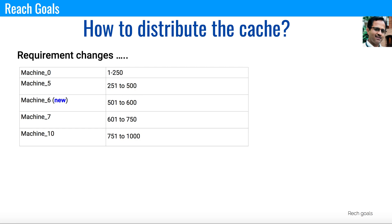When we have a new machine, even though the load balancer connects to it, it will not have content. So we have to redistribute the key-value pairs or the content which are in the cache servers. What happens here is, if you look at the screen, the change only happens in Machine 6 and Machine 7 — it is not happening across all the machines. That is what we call consistent hashing.